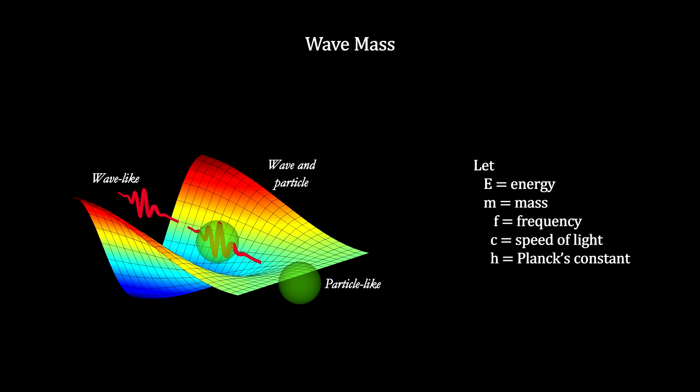Since both mass and energy are associated with oscillations in the particle field, we can simply combine Einstein's equation for mass energy and Planck's equation for wave energy to calculate the mass of a wave.